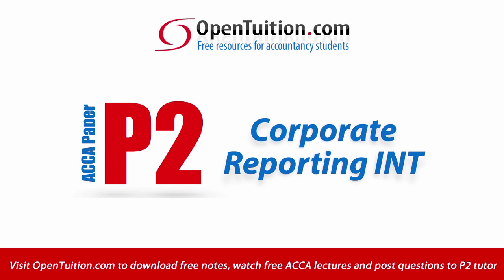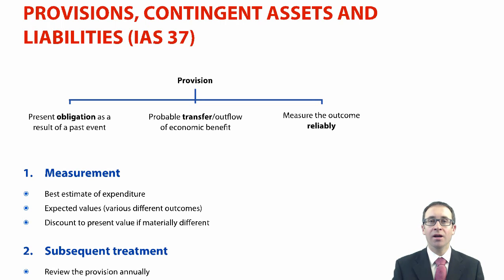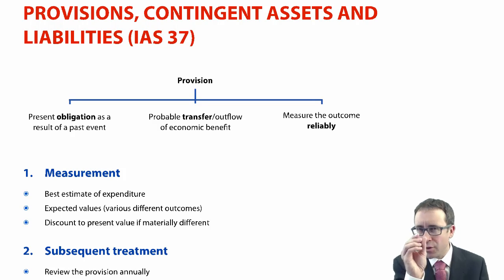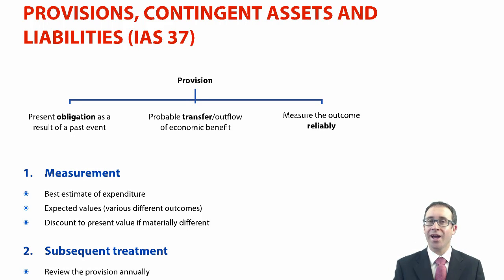This is a lecture from OpenTuition. To benefit from the lecture you should download the free lecture notes from OpenTuition.com. Let's go through and have a look at a standard that you've previously seen at F7 level — you even touched upon it at F3 level ever so briefly. It's looking at provisions, contingent assets, and contingent liabilities, which is covered by IAS 37.